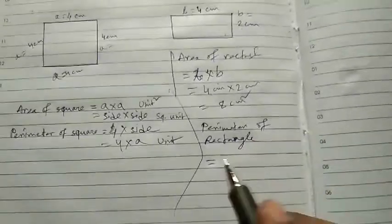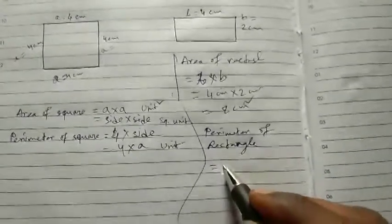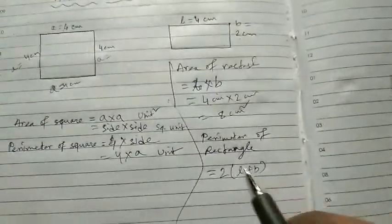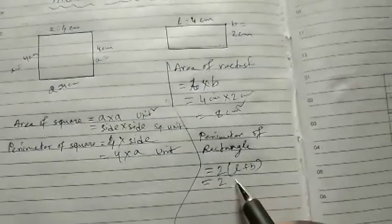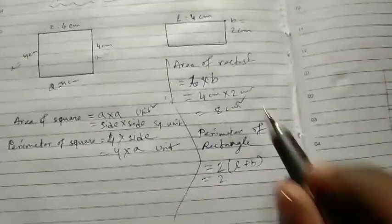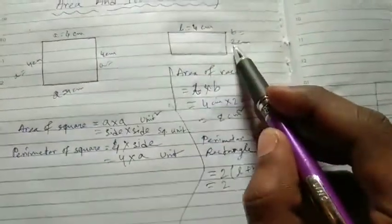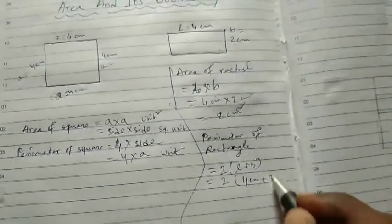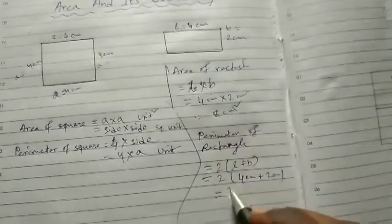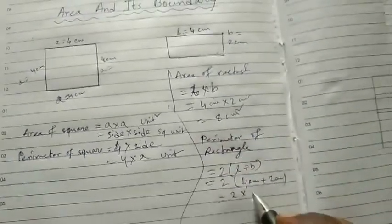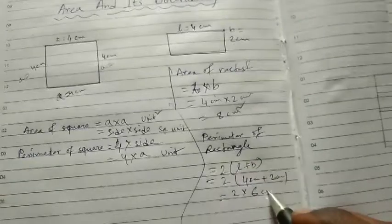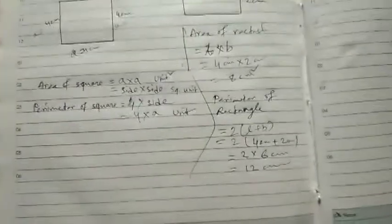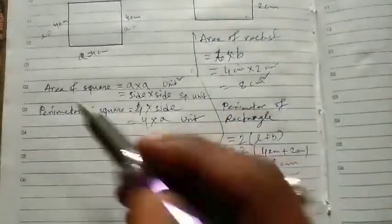Perimeter of rectangle. Perimeter of rectangle is equal to 2 into length plus breadth. So 2 into length plus breadth - this length is 4 and breadth is 2. How do you do? 2 into, length is 4 cm plus 2 cm. Breadth is equal to 2 into 6, which equals 12 cm. You can find it.